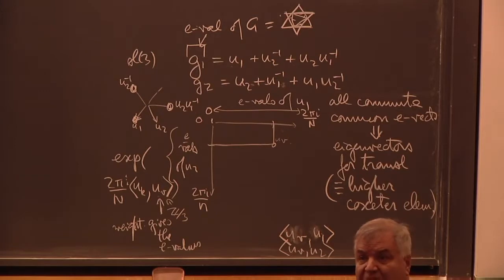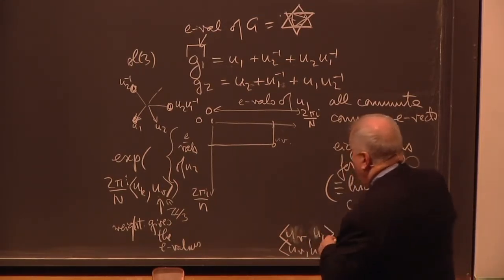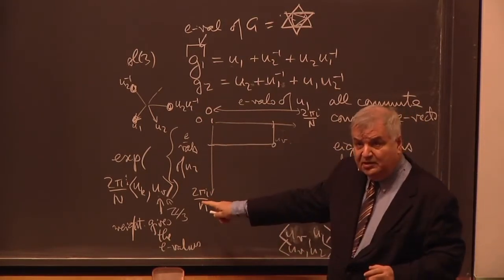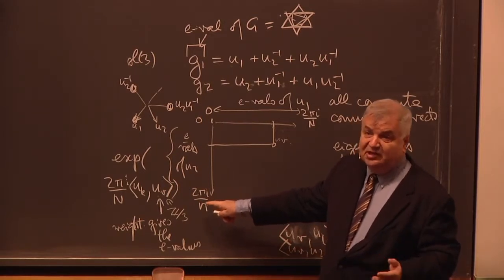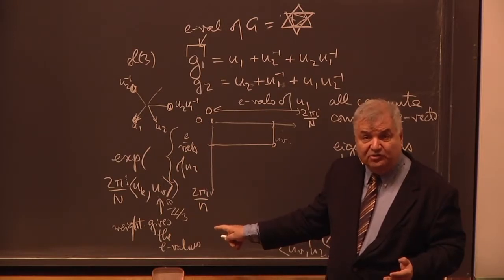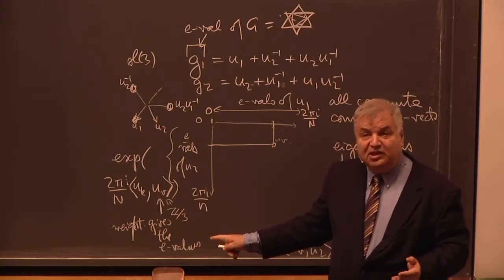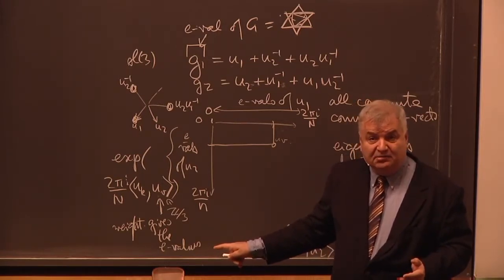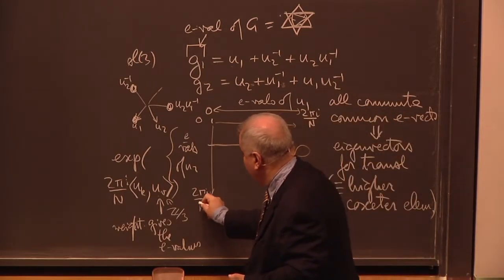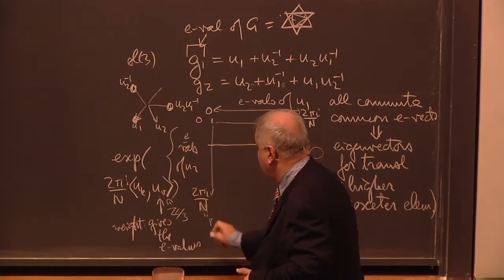For SU2, we have two translations but they commute. These are unitaries, and here I plotted them. Since they're eigenvalues for unitaries, they will be complex numbers of modulus 1. The proper way to plot them is to take the logarithm divided by 2πi. And then you get, because there are some roots of unity — this is 2πi over n — and in the case of that star, n was 8.